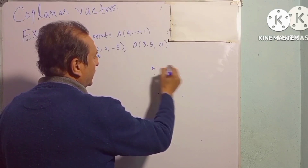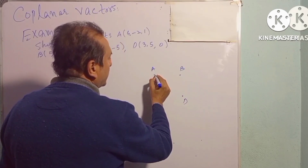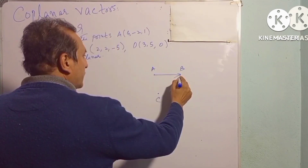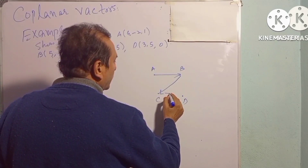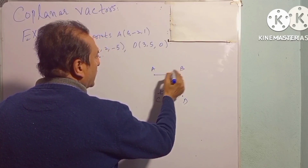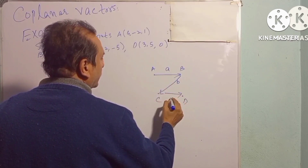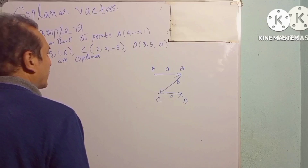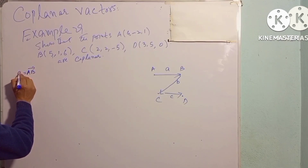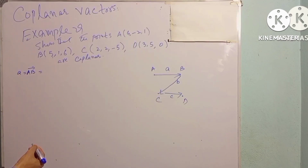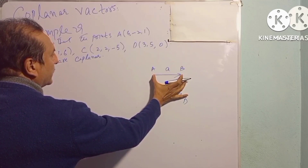یہ ہمارے پاس point A ہے، یہ point B ہے، یہ C ہے اور یہ D ہے۔ AB سے ہم ایک vector بنا لیں گے، B اور C سے دوسرا vector، اور C اور D سے تیسرا vector بنا لیں گے۔ AB vector کو small a سے، BC vector کو small b سے، اور CD vector کو small c سے show کریں گے۔ AB vector find کرنے کے لیے point B میں سے A کو minus کریں گے۔